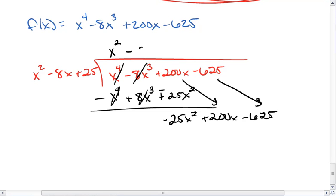I then get minus 25. So negative 25x squared. 25 times 8 is 200, so I get plus 200x. 25 times 25 is 625 minus 625.